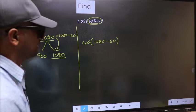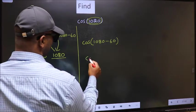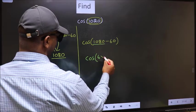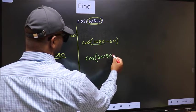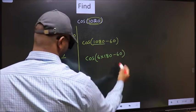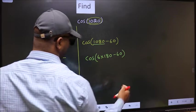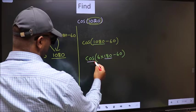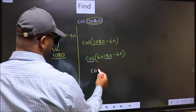Next, cos. In place of this, we should write 6×180-60. Next, here we have 180. So cos is not going to change. It will remain cos.